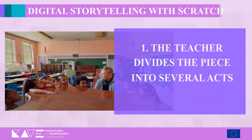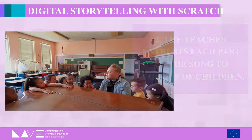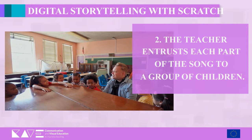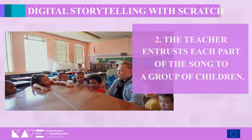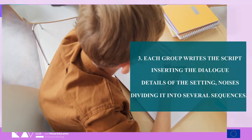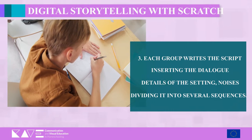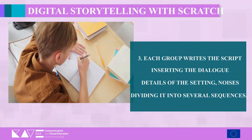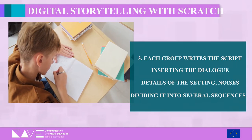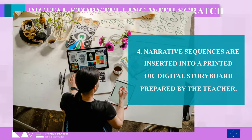Step two — the teacher entrusts each part of the story to a group of children; the same part can also be entrusted to several groups. Step three — starting from the assigned part, each group writes the narrative script, inserting the dialogue between the characters and describing the details of the setting, dividing it into several sequences from a minimum of two to a maximum of five.